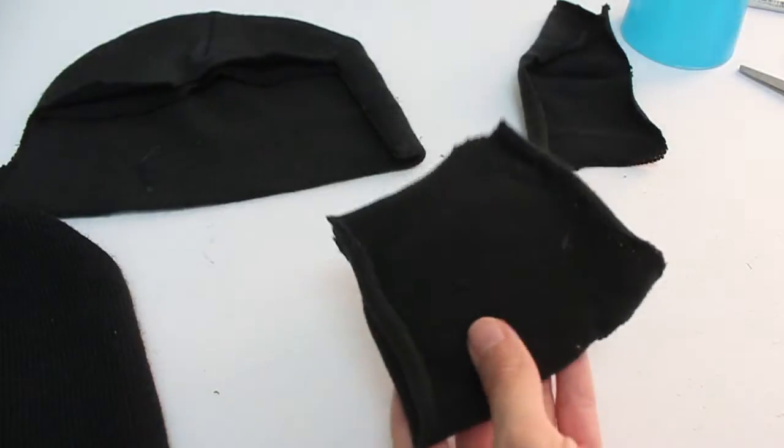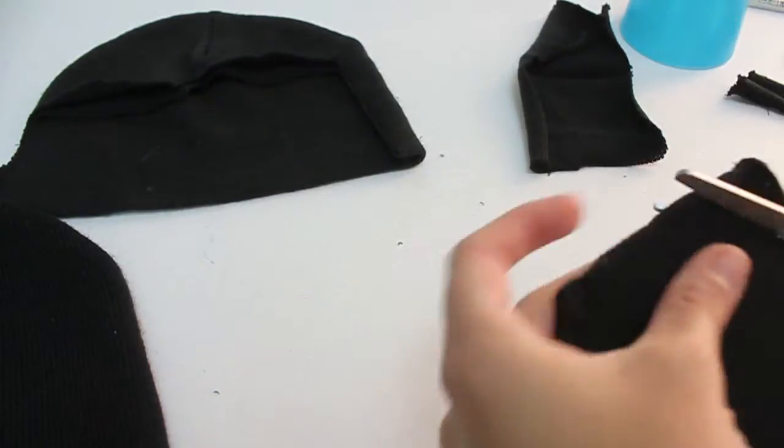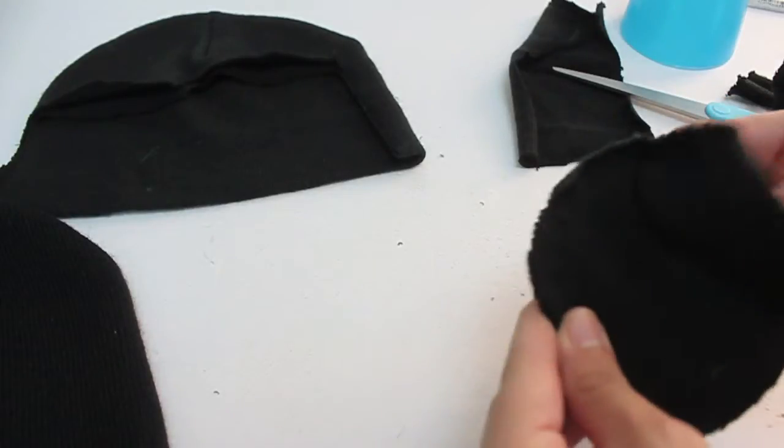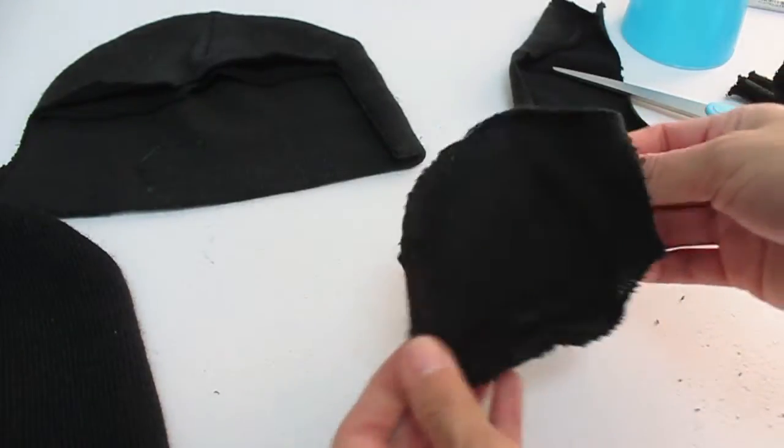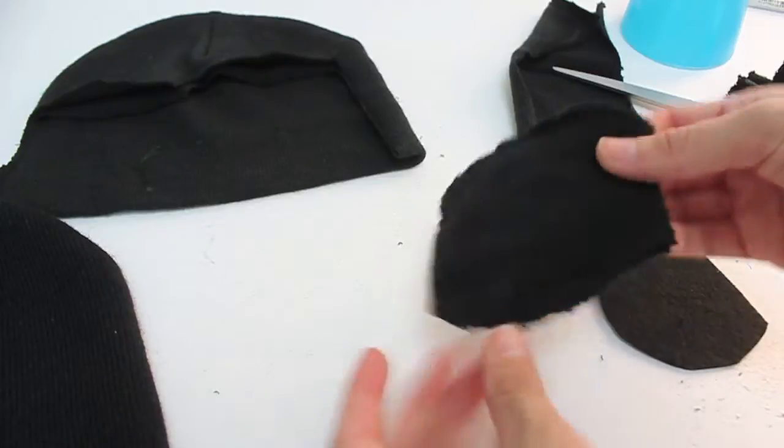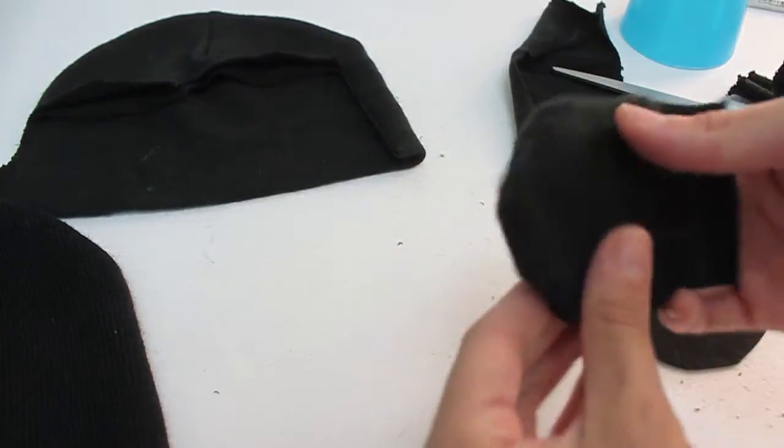Then I'm going to take my scissors and trim off any extra fabric all around. And now I'm going to remove my felt ear out and flip it inside out once more.